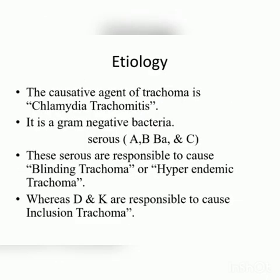Coming towards its etiology, the causative agent of trachoma is Chlamydia trachomatis, which is a gram-negative bacteria. It is an obligate intracellular parasite, meaning it is only active inside the host cell. It has the characteristic that it may behave like a virus in some ways. The serotypes are A, B, Ba, and C.